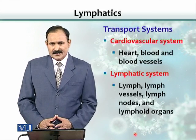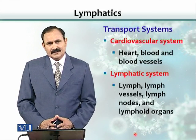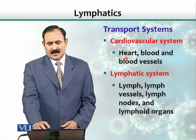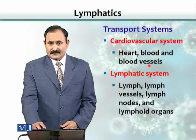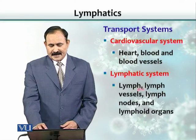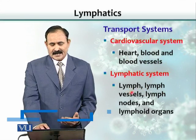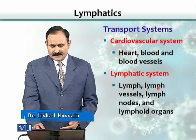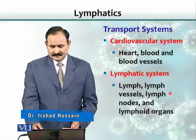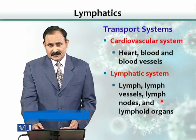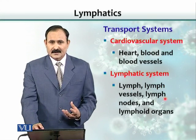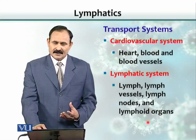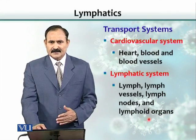The transport system in the body includes the cardiovascular system and lymphatics. The cardiovascular system is composed of the heart, blood, and blood vessels. Lymphatics are channels that contain lymph — they have lymph vessels like blood vessels, and also lymph nodes that are houses of lymphocytes and macrophages. There are other lymphoid organs we will also discuss with respect to lymphatics.